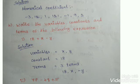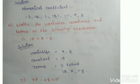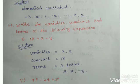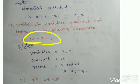What is the constant here? A single number is called constant. So the constant is 18. Next, how many terms are there? Three terms: 18, X, and minus Y. Variables means A, B, C, D type letters. Constant means a single number. Terms means the total number of terms.